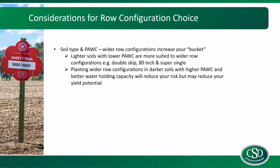I'll touch on some of the considerations for row configuration choice. The obvious ones are your soil type and plant available water capacity. The wider the row configuration you have, the bigger your bucket is in terms of plant available water. Lighter soils with lower plant available water are more suited to your wider row configurations. Planting wider row configurations in soils with higher plant available water capacity will reduce your risk but may also reduce your yield potential.